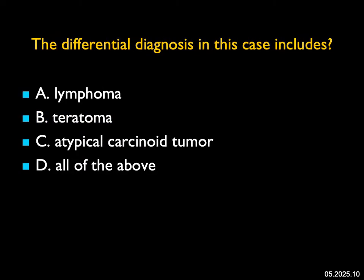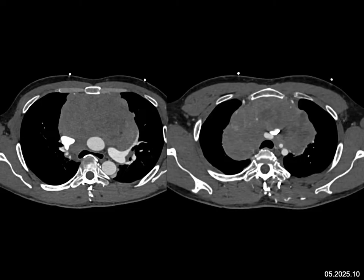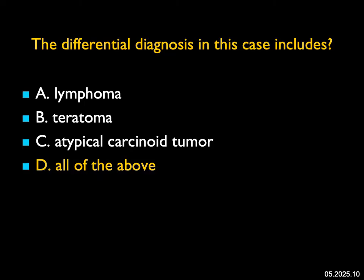The differential diagnosis in this case includes: it's a very large anterior mediastinal mass. It's solid, not very vascular, but with some areas of vascularity. It could easily be lymphoma. It could be a teratoma, though usually we like to see fat or calcifications. We've seen several cases of atypical carcinoid tumor that are very large — thymic carcinoids — which may be cystic but can be soft tissue density diffusely. So all of these are in the differential diagnosis, making the correct answer D. This was an atypical carcinoid tumor, an unusual diagnosis but one of the things you need to think about.